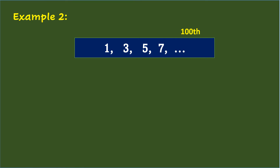Example 2: the sequence is 1, 3, 5, 7, and so on up to the 100th term. What is the 100th term? To find the rule, find the common difference first. Starting with 1 to 3, 3 to 5, 5 to 7, you need to add 2 to the previous term to get the next term. This gives you the idea of how to find the 100th term.